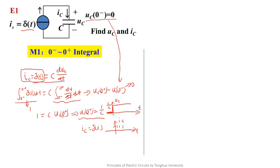With this result, let's think about such a question: what is the effect of this unit impulse function on this capacitor? At t equals zero-minus its voltage is zero, and at t equals zero-plus its voltage suddenly changes to 1/C. That means qc(0−) is zero, and qc(0+) is C times 1/C equals one. The effect of this unit impulse function is moving a unit charge to the positive and negative plates.